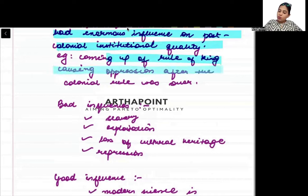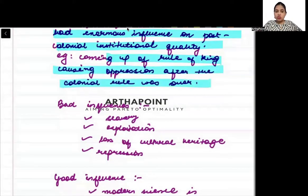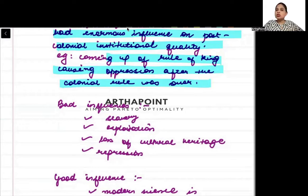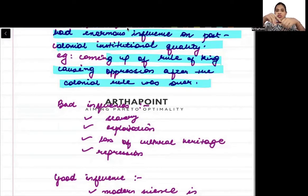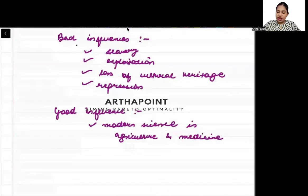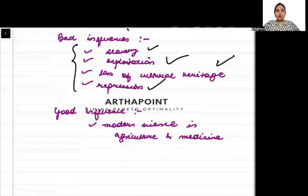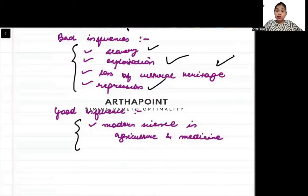Even after colonial rule was over, the king came back and started exploiting people — there was still oppression and exploitation long after the colonies went. That feature was adopted: the colonies were oppressing people, so we will continue oppressing people, continue exploiting people. The bad influences of any colony coming to a country included slavery, exploitation, loss of cultural heritage, and repression. But there were some good influences also — these colonies brought with them good science for agriculture and medicine. They were technologically very sound.